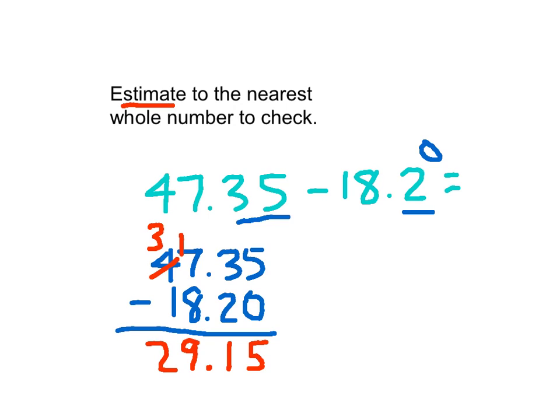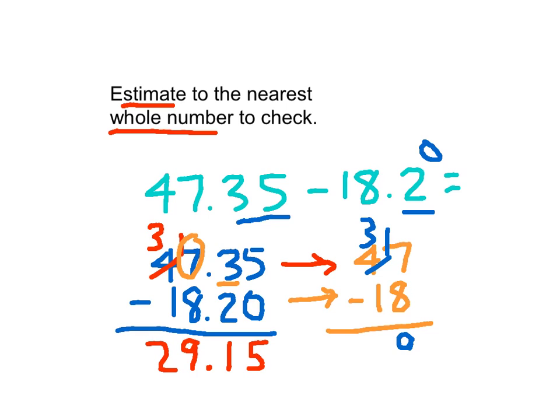Now my instructions say to estimate to the nearest whole number to check. So I look at that first number and I'm saying nearest whole number, so I look at the ones place within that number. So that there is closest to 47. The other number is closest to 18. And do I add or subtract? The sign stays the same, so I subtract. 47 minus 18: can't do 7 minus 8, so 4 becomes a 3, 7 becomes 17, 17 minus 8 is 9, and 3 minus 1 is 2. My answers are close enough together, so my estimate is valid and my subtraction was done correctly.